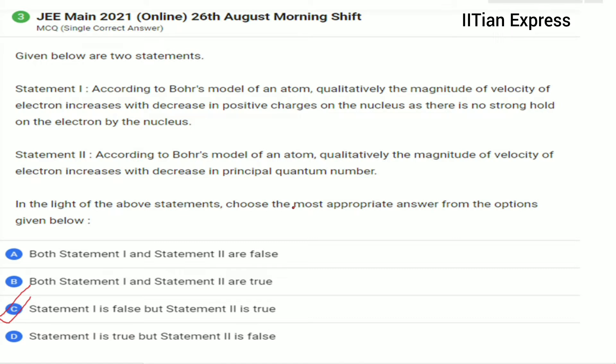Let's start from Statement 1. According to Bohr's model of an atom, qualitatively the magnitude of velocity of electron increases with decrease in positive charges on the nucleus, as there is no strong hold on the electron by the nucleus.